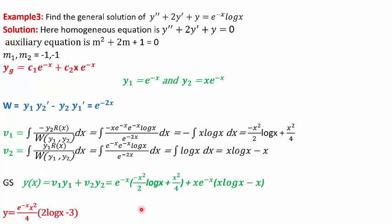We will do one more example. In all these problems, the main thing is solving the integrals to find v1 and v2, which takes time; otherwise, these questions are very simple. In the third example, we are asked to solve y'' + 2y' + y = e^(−x)·log(x). The right-hand side is of a different form. The homogeneous equation is y'' + 2y' + y = 0, giving auxiliary equation m² + 2m + 1 = 0, so m = −1, −1. The general solution is c1·e^(−x) + c2·x·e^(−x), giving y1 = e^(−x) and y2 = x·e^(−x).